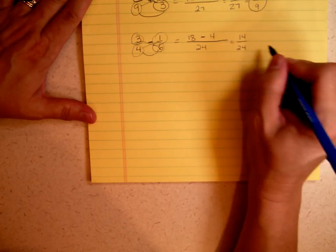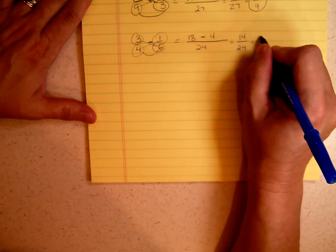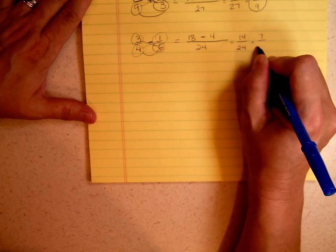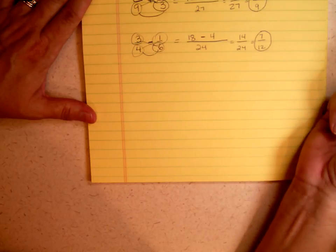18 minus 4 is 14 over 24. Because those are both even numbers, I'm going to take a 2 out. 14 divided by 2 is 7, and 24 divided by 2 is 12. So my answer is 7 twelfths.